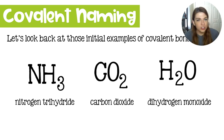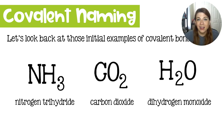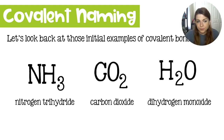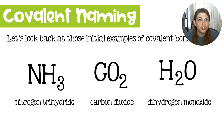So chemists, just like in the ionic naming lesson, have a set of rules for how they're going to name compounds so that no matter what language we speak, we can all come to the same conclusion about what the compound is. The true IUPAC scientific name for ammonia is nitrogen trihydride.